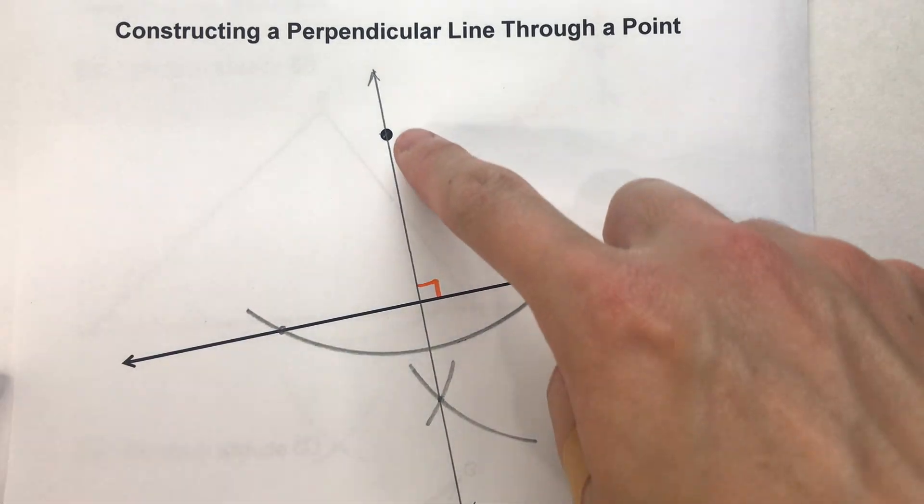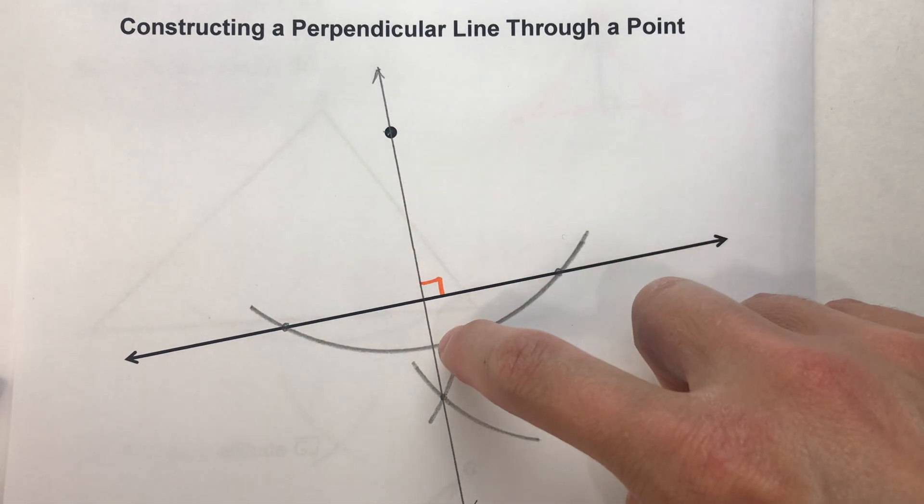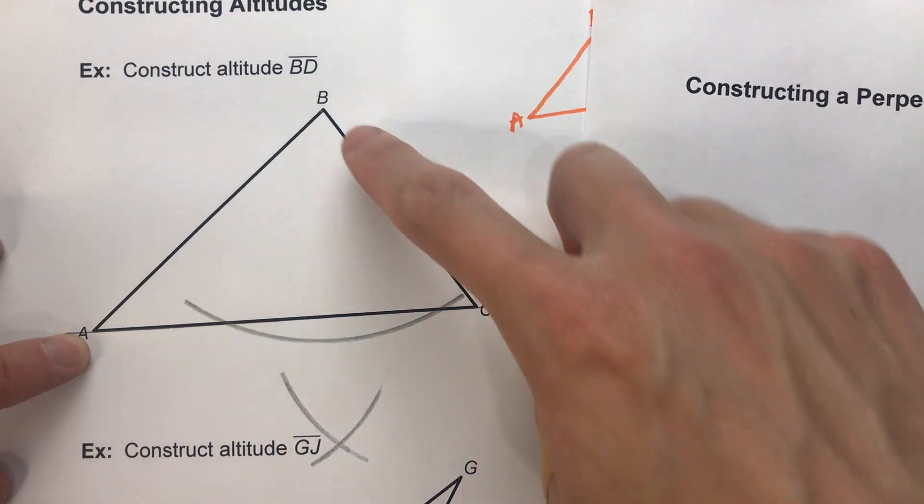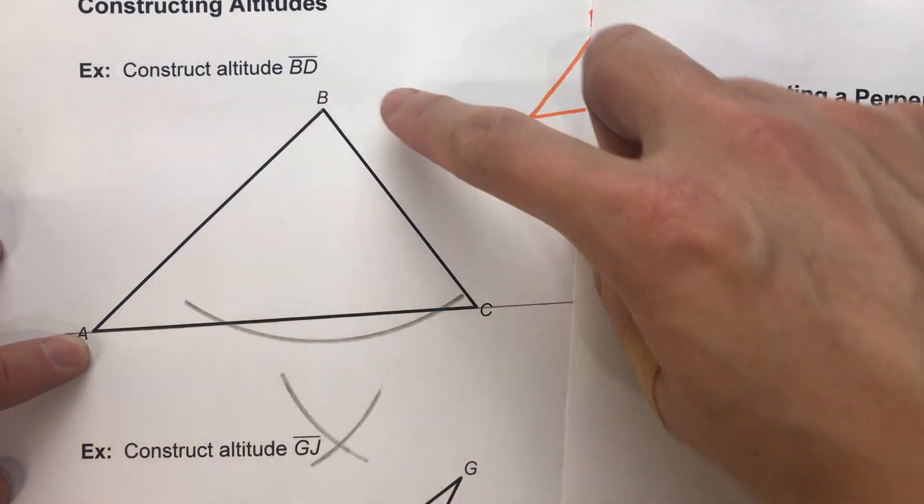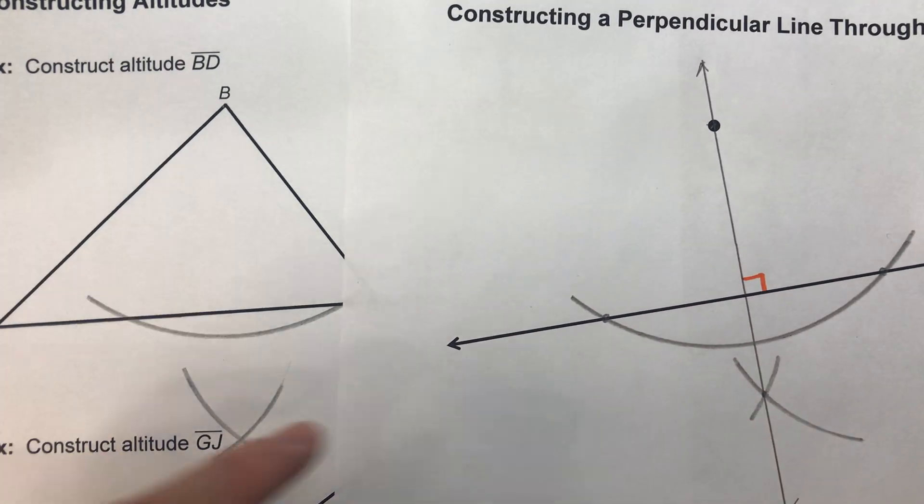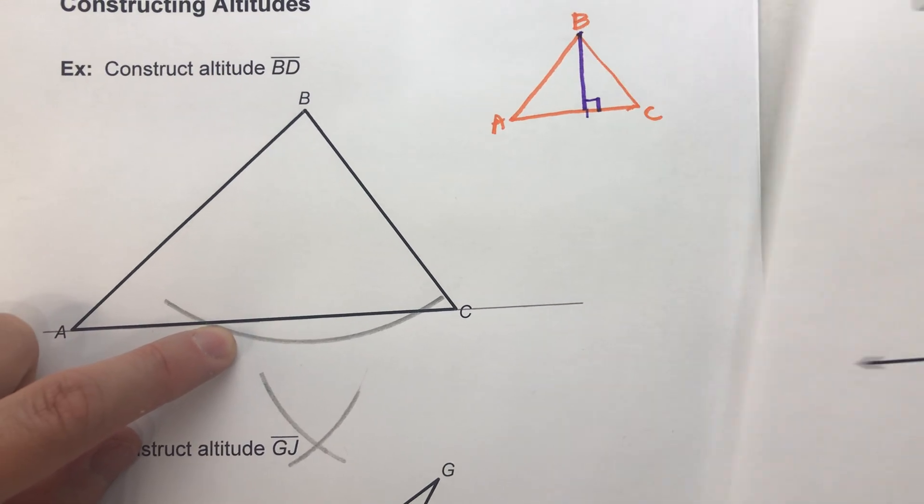When you have a line and a point and you're constructing a perpendicular through it, that's basically what we're doing here. We have a line and we could almost ignore the rest of the triangle and focus on that point B. And we're basically doing that exact same construction on this triangle.